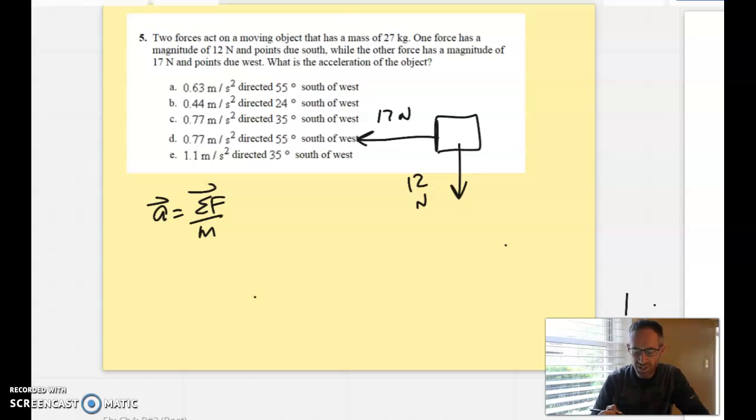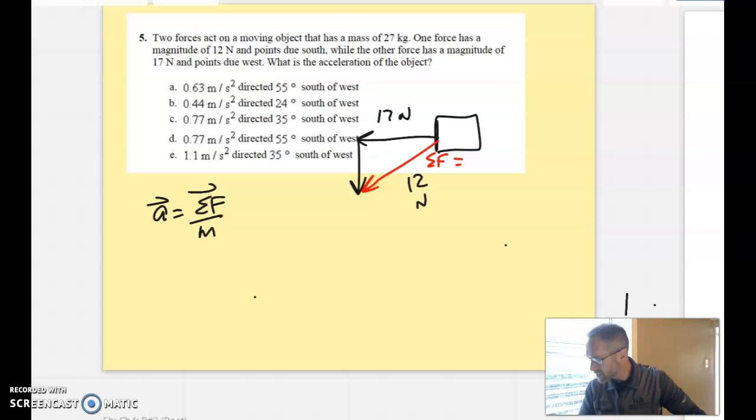Acceleration and net force are vectors, so I'm going to need a direction on them. So what I want to do is take that 12 and move it over there, head to tail. Now I can see that this one right here is the net force. If you do 12 squared and 17 squared and take the square root, you're going to get 20.81 newtons.